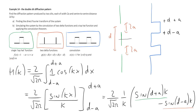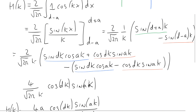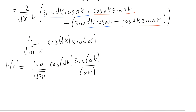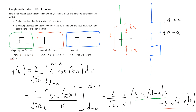For the second part of the question we'll take the Fourier transforms of these two functions separately and then combine them using the convolution theorem. We should find that we get the same result as we obtained by taking the Fourier transform directly.